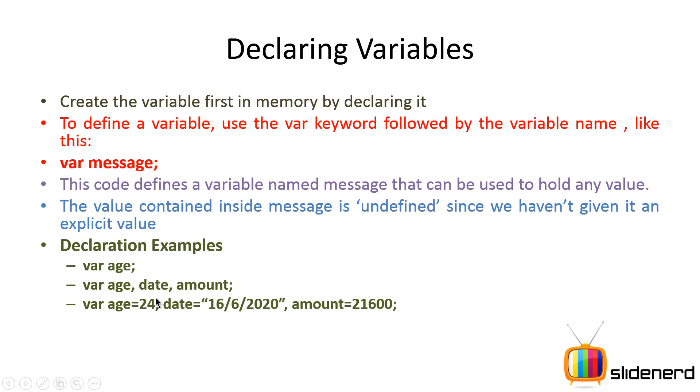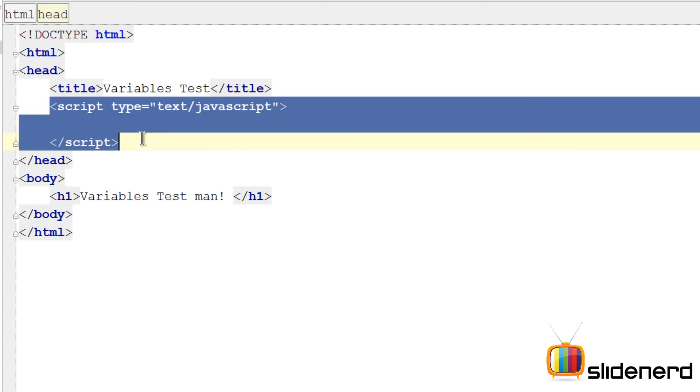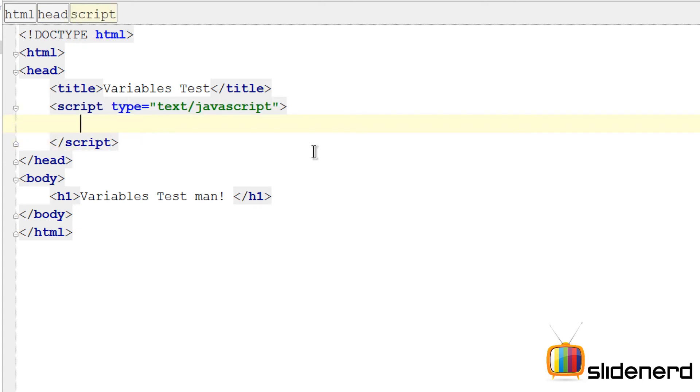Let's go to JetBrains WebStorm and try to explore these variables and keywords in more detail. Here I'm using JetBrains WebStorm. I have a simple HTML page where there's a script tag right inside the page. Inside this I'm going to write some JavaScript code.